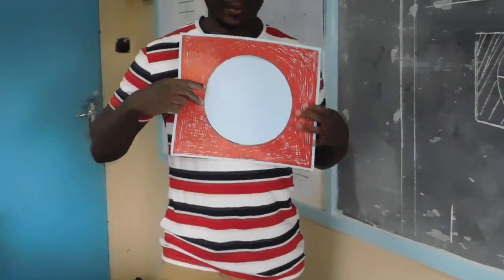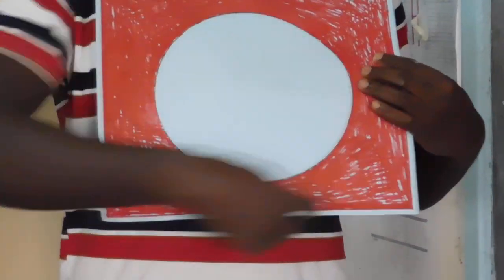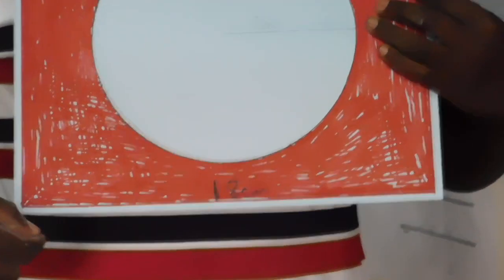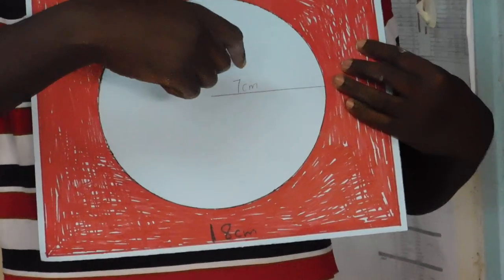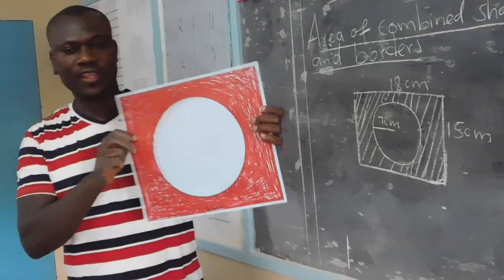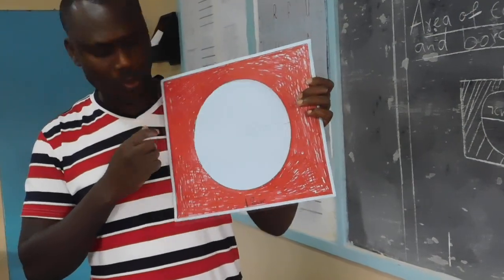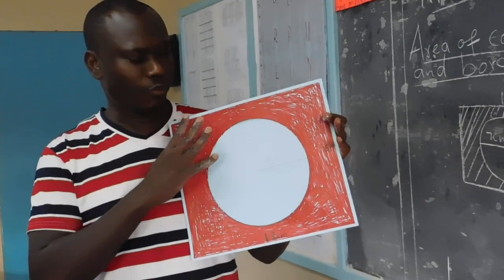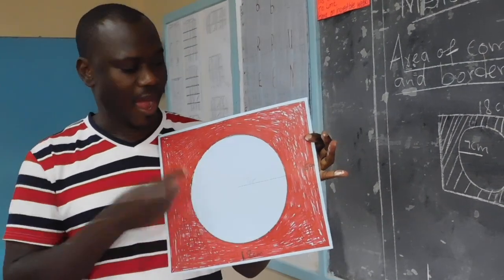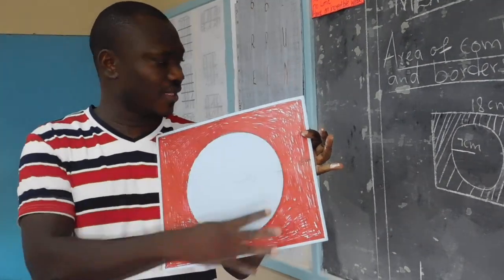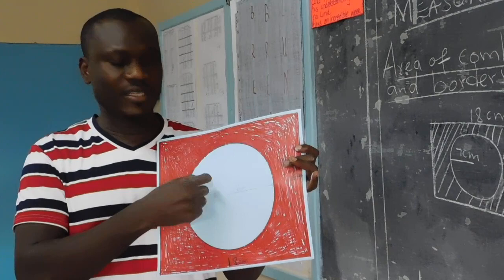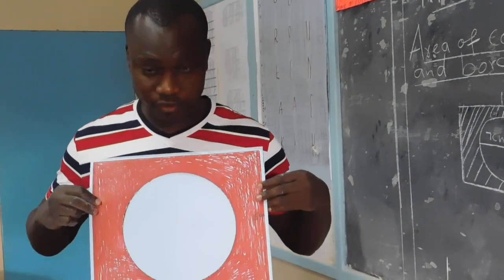I have drawn a rectangle and a circle inside it. The rectangle has a length of 18 centimeters and a width of 15 centimeters, and inside the circle I have a radius of 7 centimeters. To get the area of the shaded part, I first get the area of the whole rectangle, then subtract the circle because the shaded part does not include the circle.